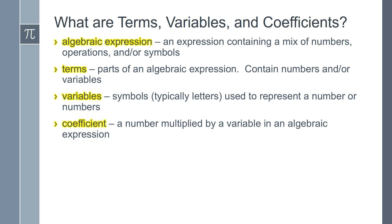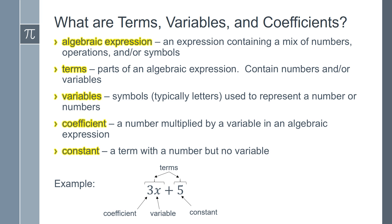A coefficient is a number multiplied by a variable in an algebraic expression. A constant is a term with a number, but no variable. And here's an example. In the expression 3x plus 5, 3x and 5 are both terms. The 3 is a coefficient because it is multiplied by the variable x, and 5 is a constant.